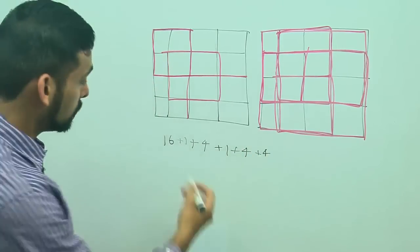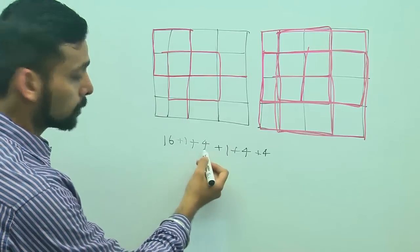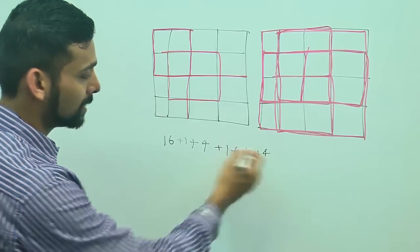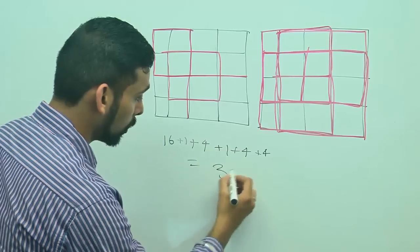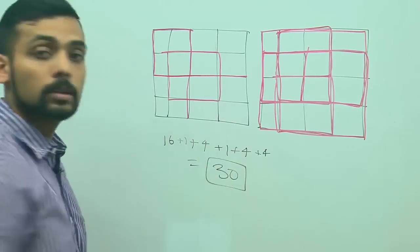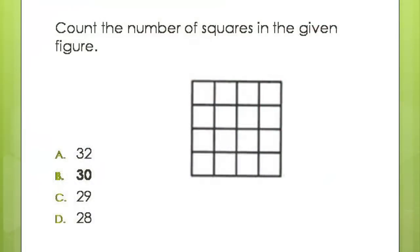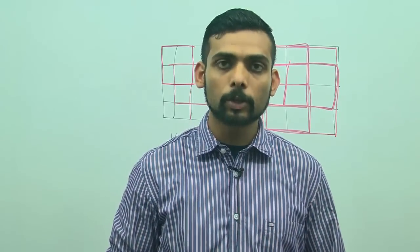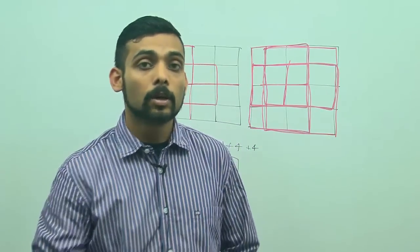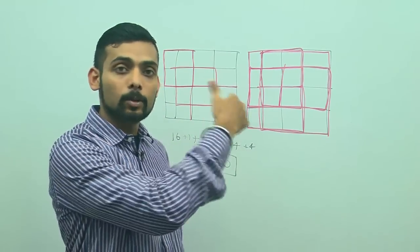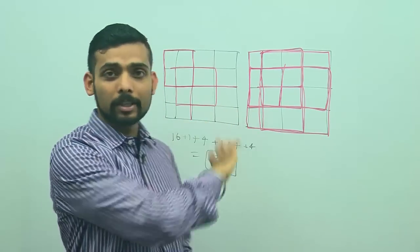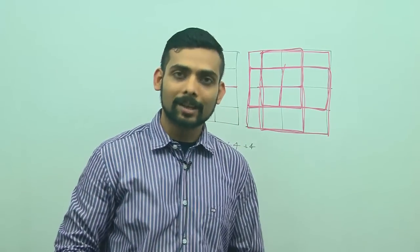So, totally, I have 16 plus 1, 17 plus 4, 21, 22, 26 and 30. So, all in all, I have 30 squares inside this figure and my answer will be option B, 30. This is how we do analytical reasoning friends. I hope this video was useful to you and you got insights into how to dive into the details, how to see the figures properly and I will see you in another video. Thank you.